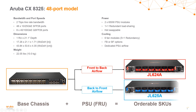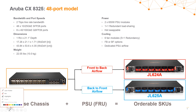If the customer wanted a back-to-front airflow option, that would simply be the JL625A SKU, which again comes pre-populated. This is the back-to-front airflow, so these are color coded blue. You'll notice the switches support 48 ports of 10/25 gig SFP28, as well as eight ports of 100 gig — which can also operate as 40 gig — QSFP28. And that gets us to two terabits of line rate bandwidth for wire speed performance.